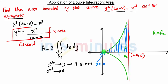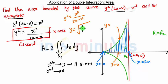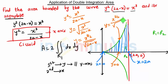The strip moves from x = 0 to x = 2a, giving the x-limits. The lower limit of the strip is y = 0 (the x-axis), and the upper limit is on the curve. From y² = x³ / (2a − x), taking the square root gives y = x^(3/2) / √(2a − x). These are the limits for y, and x goes from 0 to 2a to cover region R1.